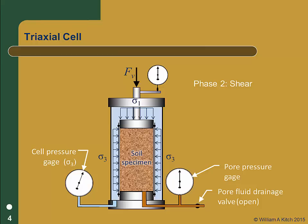In actual lab testing, there is a phase that precedes the consolidation phase. This preceding phase is the saturation phase. It is critical during the test that the soil be 100% saturated, and the details of getting a specimen to 100% saturation are an important part of the testing. However, for purposes of our discussion, we will simply assume that the specimen is at 100% saturation before consolidation.